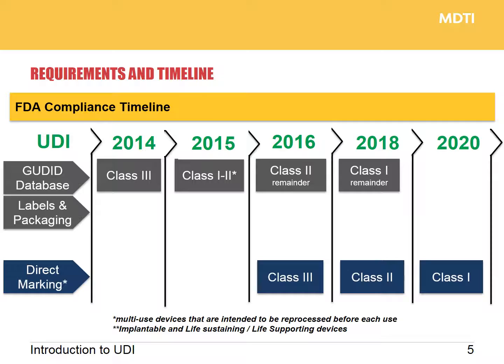In regards to timelines to compliance: Class 3 devices were already compliant by 2014. Class 1 and 2 life-saving by October this year. The main group is going to be the Class 2 organizations by September 24th, 2016, with Class 1 and the remainder by 2018 for labeling and database. And then if you are involved in direct marking, you have until 2020 to fully comply, so by the end of September 2020 all medical devices of all classes need to have complied with the FDA UDI rule.